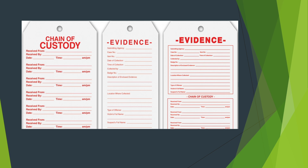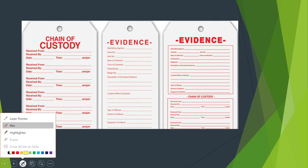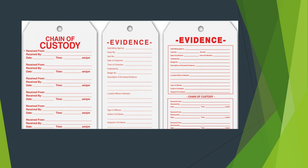Here we are showing an example of a chain of custody form. The chain of custody form looks something like this — you have to feed all the details here. It includes fields such as: received from, received by, date, and time. Whatever I.O. officers handled it and were in possession, they are written here in detail.